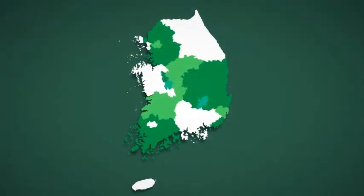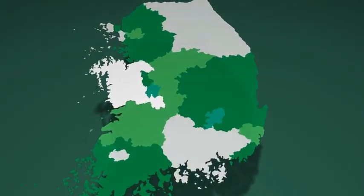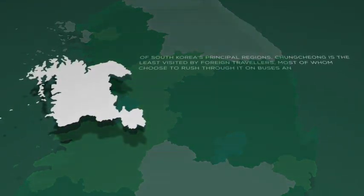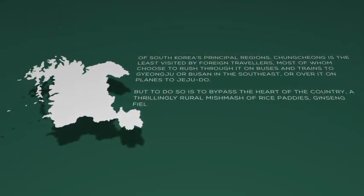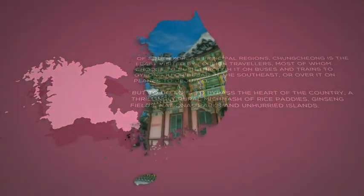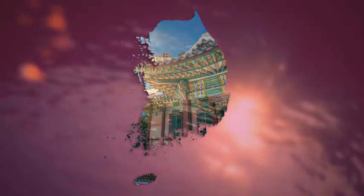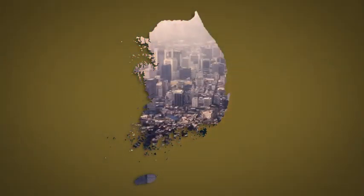Zoom in to areas of interest and hide areas you don't need to focus on certain regions. Animate individual provinces and add your own text and camera moves as required. Use your own content as a texture for the country map.